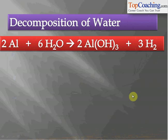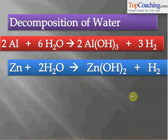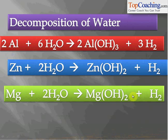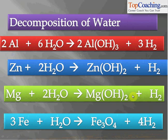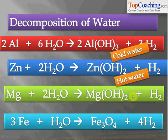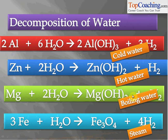Another way to produce hydrogen gas is the chemical decomposition of water by reacting it with metals. Water reacts with aluminium to form aluminium hydroxide and hydrogen gas, with zinc to form zinc hydroxide and hydrogen gas, and with magnesium to form magnesium hydroxide and hydrogen gas. Aluminium reacts with cold water, zinc with hot water, magnesium with boiling water, and iron with steam.